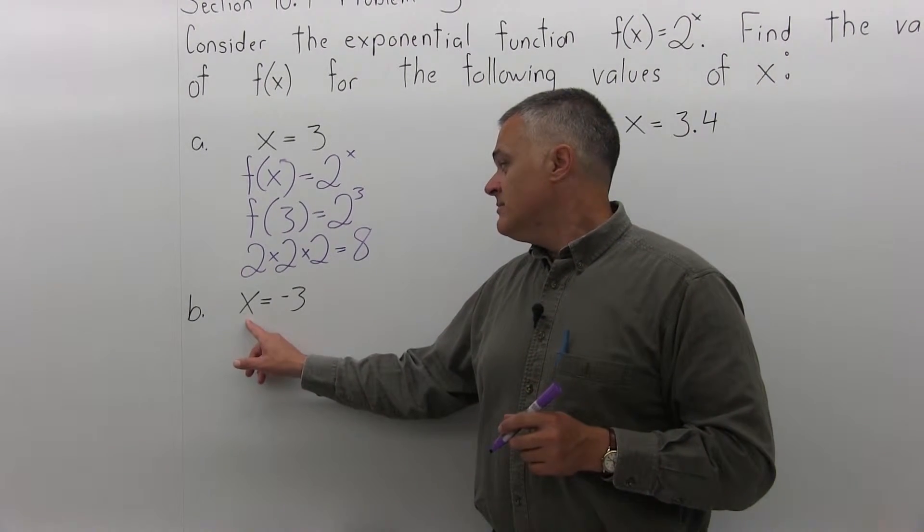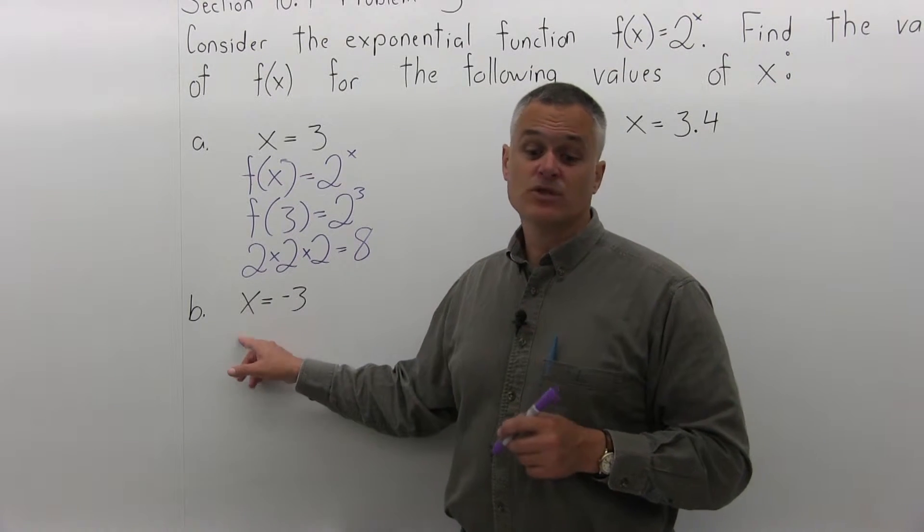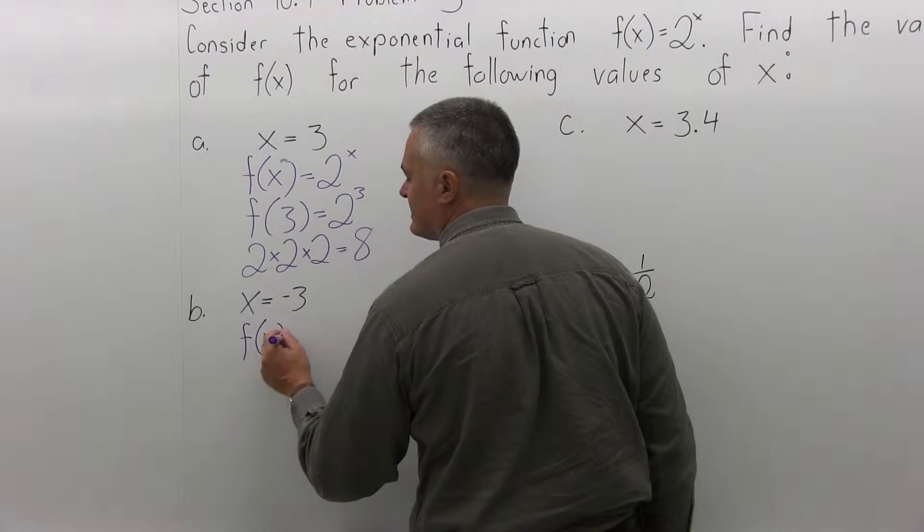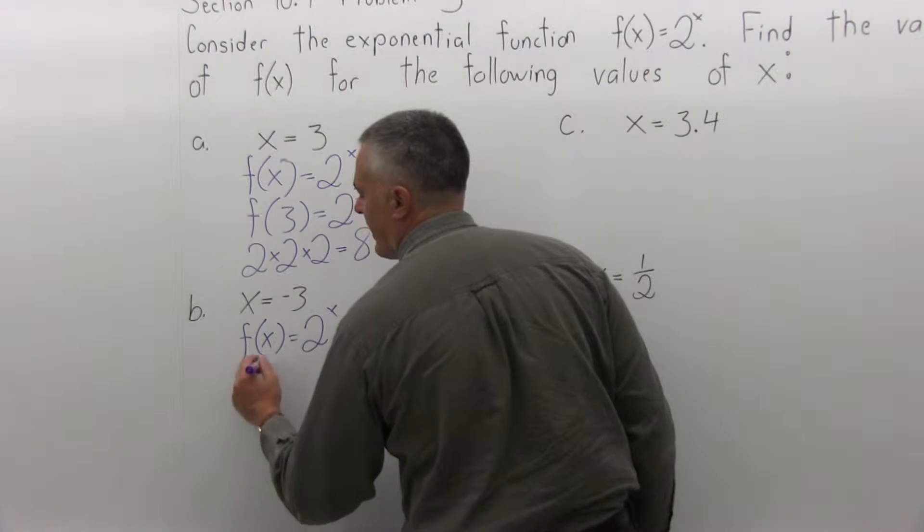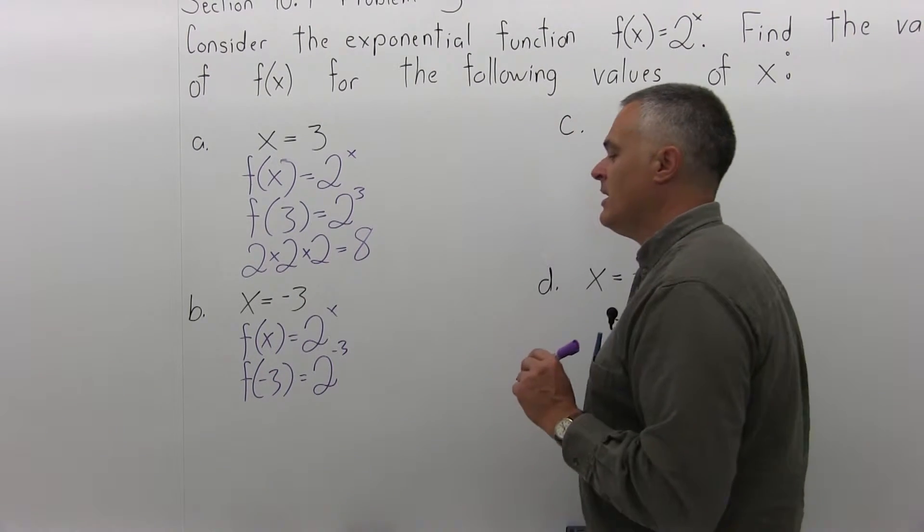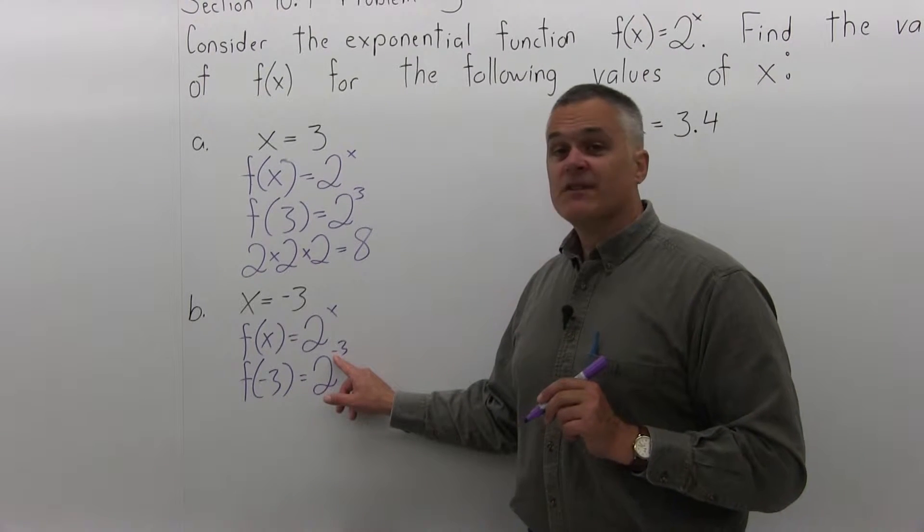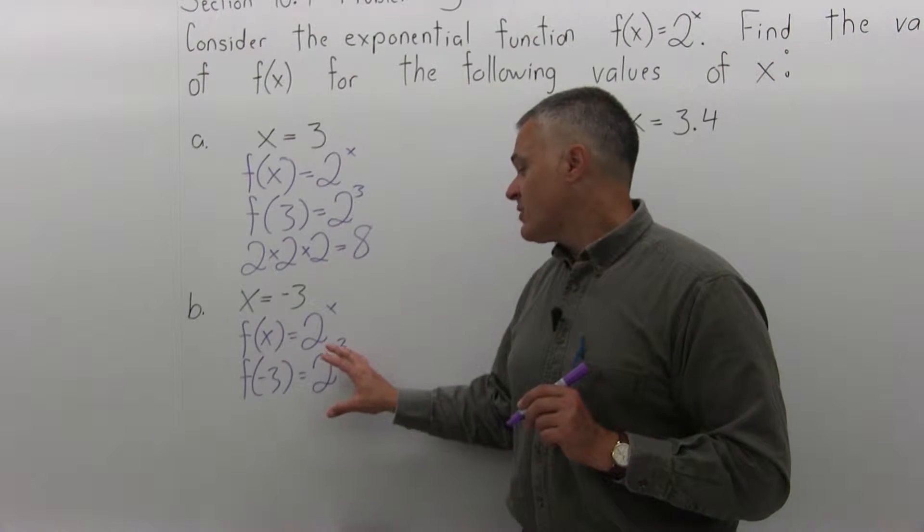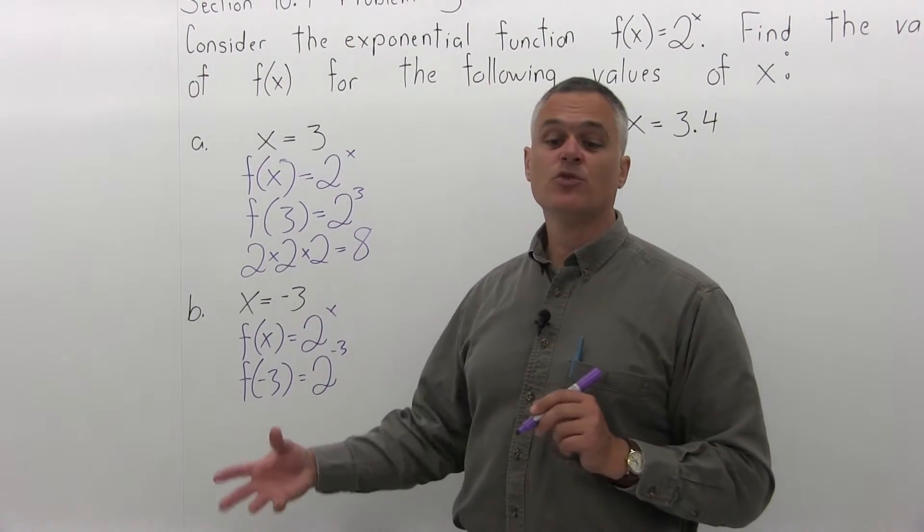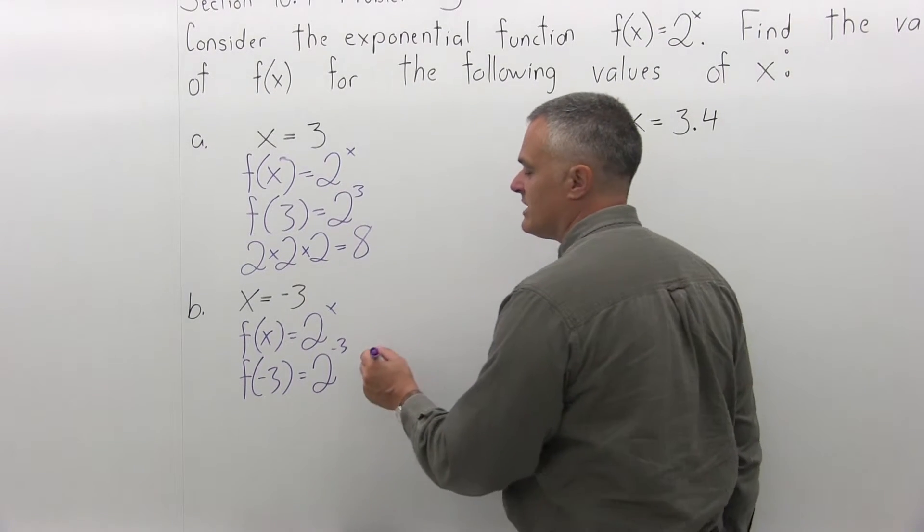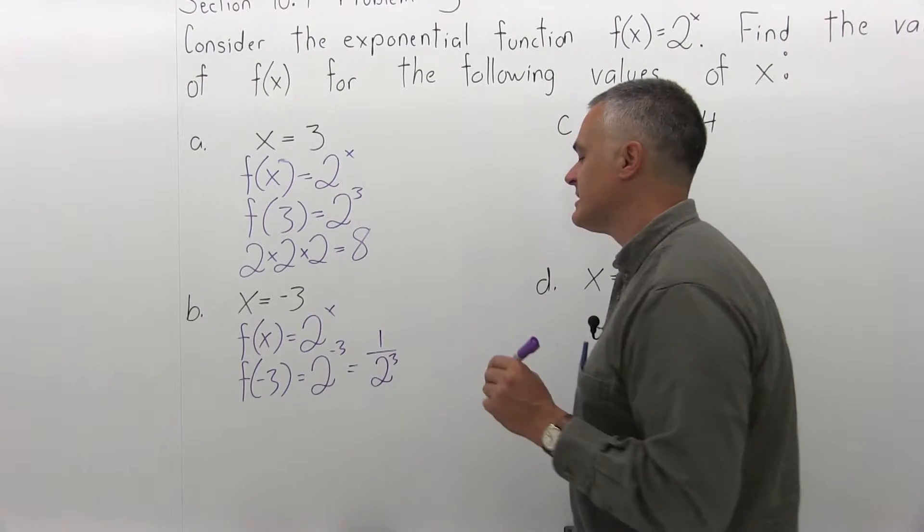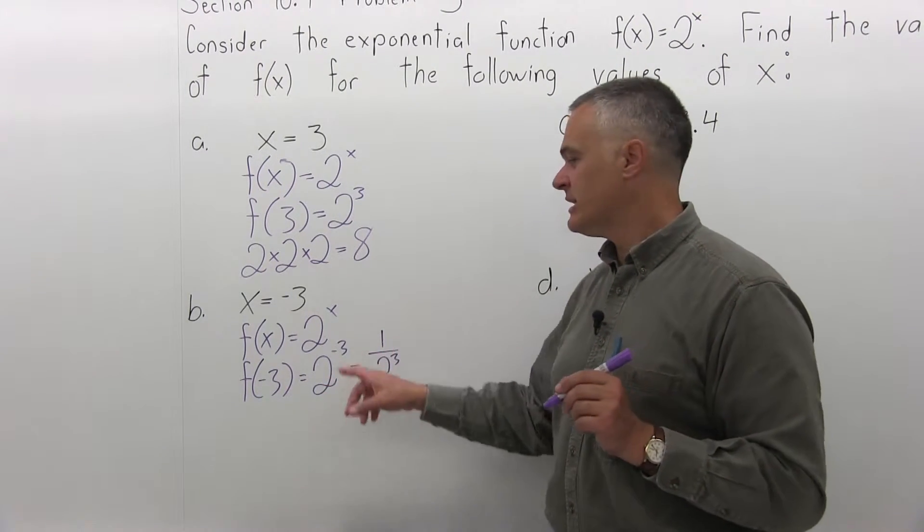Part b says what's f of x when x is negative 3. So it's similar, but there's a negative. So again, we have f of x equals 2 to the x power. So f of negative 3 would be 2 to the negative 3 power. Now, when your exponent is negative, it doesn't affect whether the whole function is positive or negative. It's just telling you whether the item you're raising to that power is in the numerator or denominator. So 2 to the negative 3 is really 1 over 2 to the positive 3. It's not that it's a negative value, it's just the 2 to the 3 is really in the denominator.